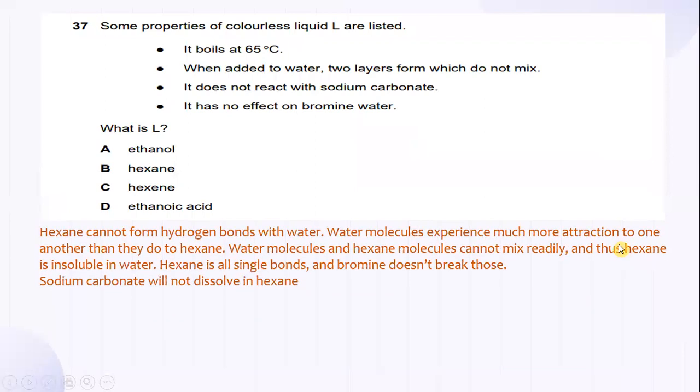And some properties of colorless liquid L are listed. So, the characteristics of L is it boils at 65 Celsius. When added to water, two layers form which do not mix. And it does not react with sodium carbonate. And also, it has no effect on bromine water. So, the explanation of the hexane cannot form hydrogen bond with water. So, water molecules experience much more attraction to one another than they do to hexane. So, water molecules and hexane molecules cannot mix readily.